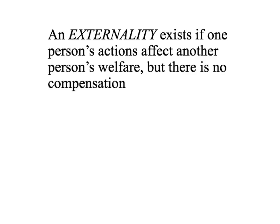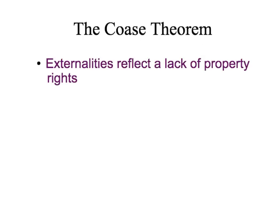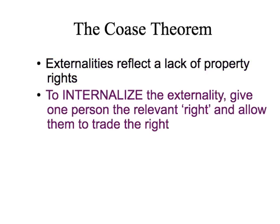So far, we've looked at Pigouvian taxes and subsidies. In this presentation, we're going to look at the Coase Theorem, which provides a framework for thinking about innovative ways to deal with externalities through the market. The starting point for the Coase Theorem is to think about externalities as reflecting a lack of property rights — to bring the externality into the market so it's no longer external, but internalized.